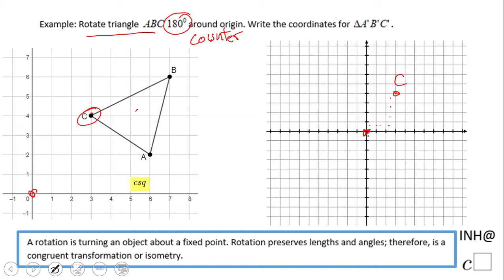And that point needs to be rotated right here around the origin. So if I connect these two points, when I rotate 180 degrees, I have to be on the other side, right here. This is 180 degrees.